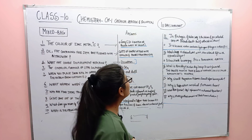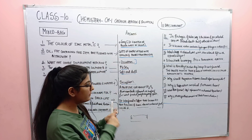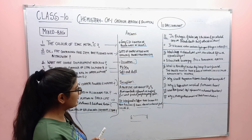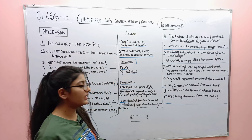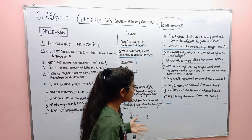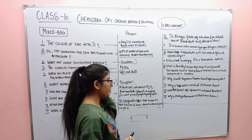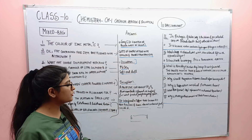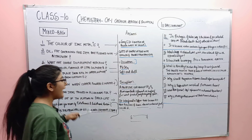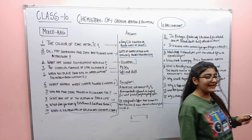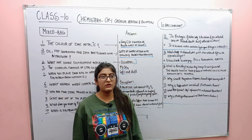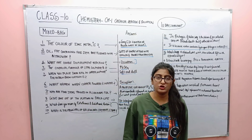The 14th question: why should magnesium ribbon be cleaned before burning in air? 15th question: why is respiration considered an exothermic process? 16th question: what does the symbol 'aq' represent in a chemical reaction? 17th question: why is photosynthesis considered an endothermic reaction? Give a reason. These are very important questions — after these, prepare the long answers for chemical equations.